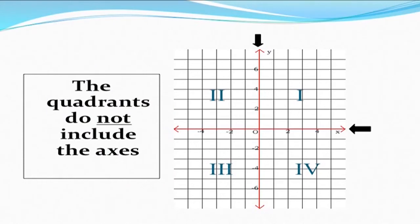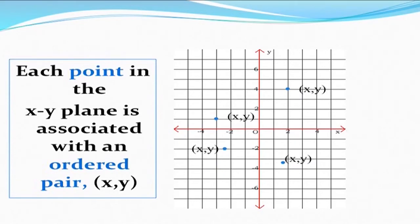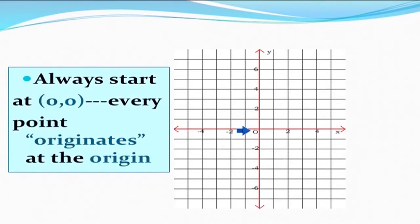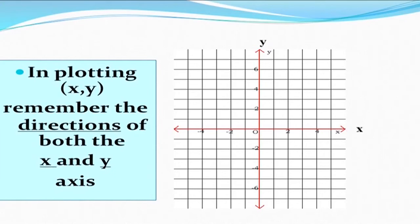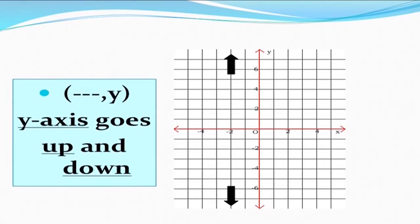The quadrants do not include the axes. A point on the x or y-axis is not in any quadrant. Each point in the x-y plane is associated with an ordered pair (x, y), as we can see the different points in the four quadrants. They are represented by the ordered pair (x, y), and the x and y of the ordered pair are called its coordinates. When finding or locating or plotting any point, we always start from (0, 0), or we originate at the origin. In plotting (x, y), remember the directions of both axes: x-axis goes left and right on the horizontal axis, and y-axis goes above or below the origin.